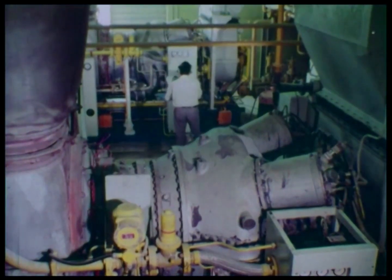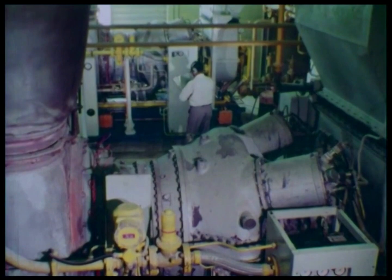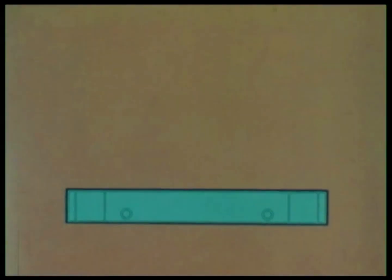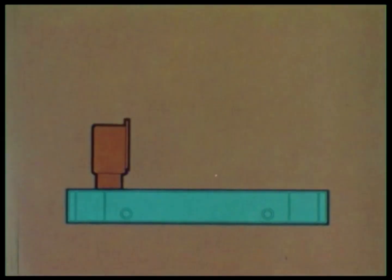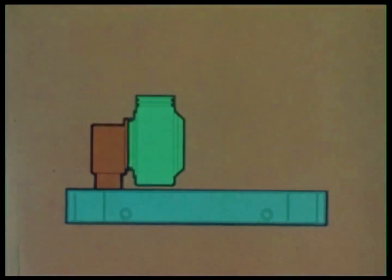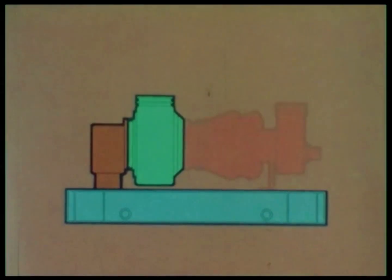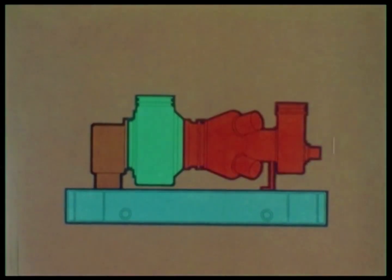The engine layout comprises three major assemblies. They're mounted on a rigid underbase — the engine's footprint. The first assembly is the gearbox, then the power turbine unit and finally the gas generator.